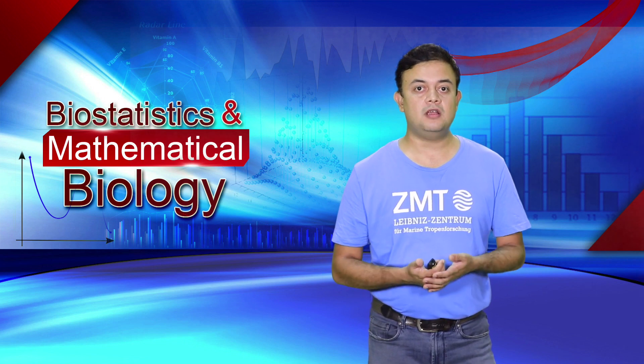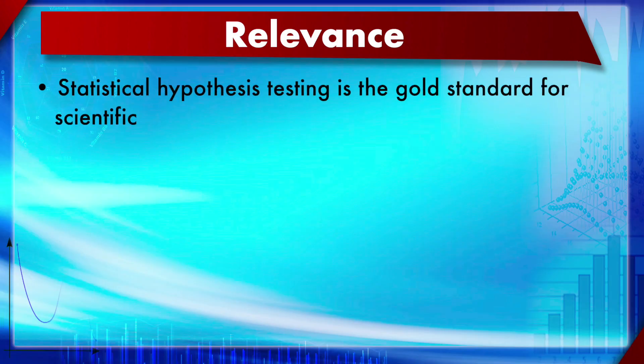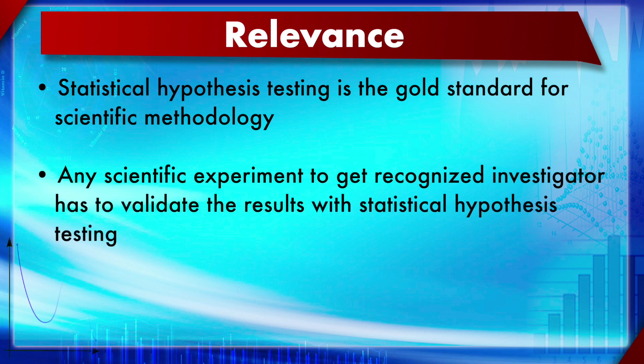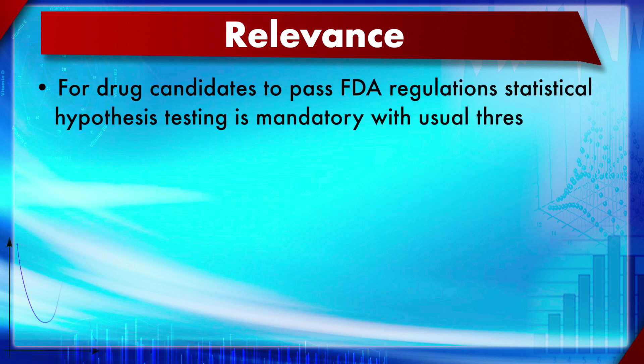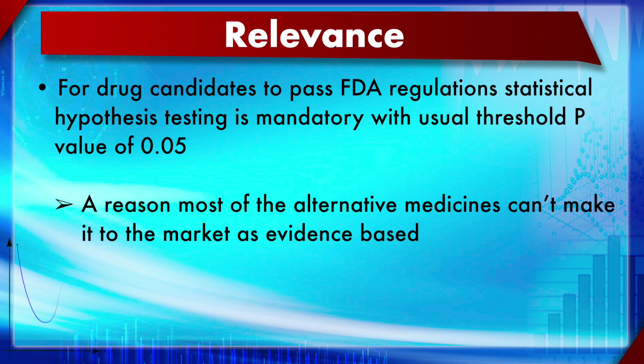Statistical hypothesis testing is the gold standard for experimental science. Any scientific experiment to be recognized must be validated with statistical hypothesis testing. For drug candidates to pass FDA regulations, hypothesis testing is mandatory with a threshold p-value of 0.05. This is why most alternative medicines cannot pass that rigorous p-value threshold and fail to market as evidence-based drugs.